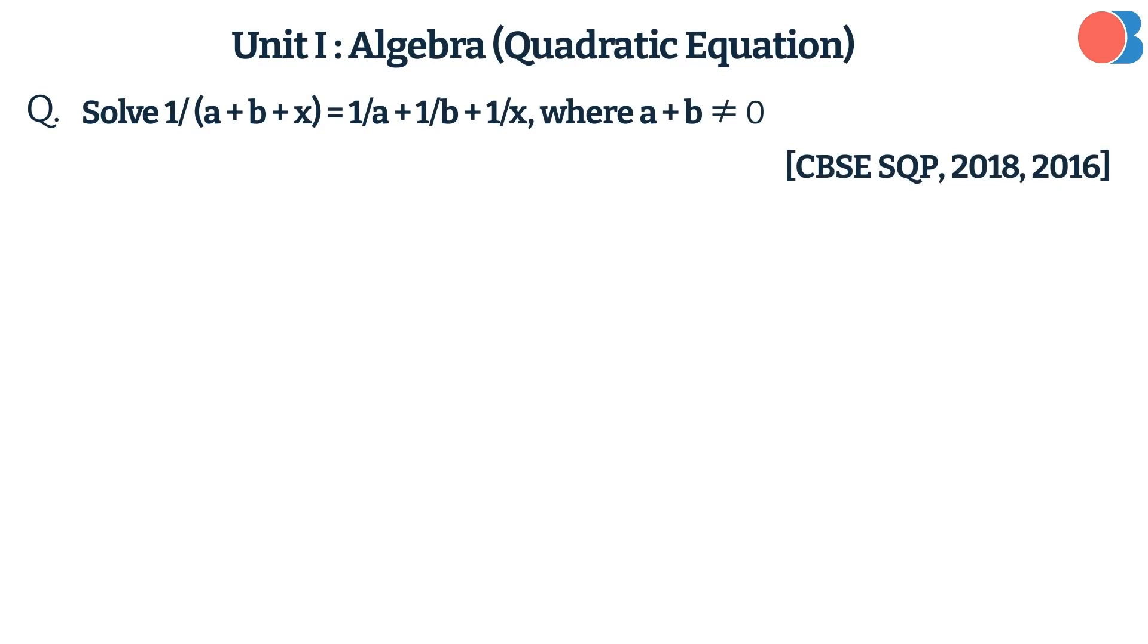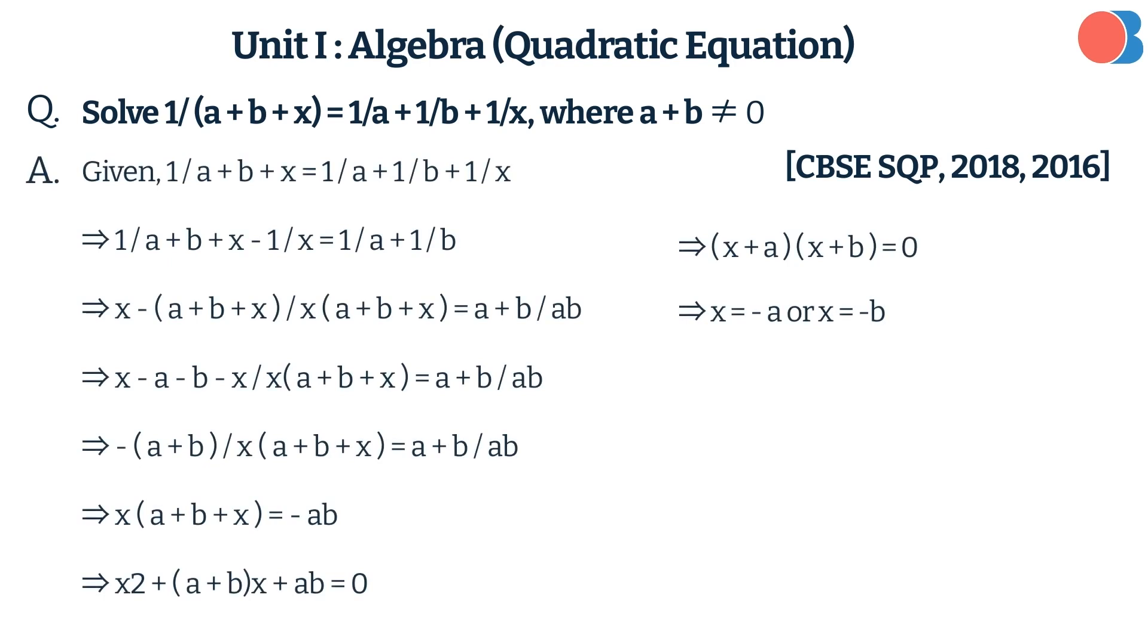Solve 1/(a + b + x) = 1/a + 1/b + 1/x, where a + b ≠ 0. Here is the answer.